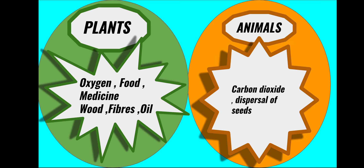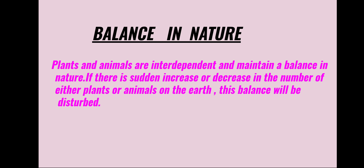Carbon dioxide gas released by animals is used by plants for photosynthesis. Animals also help plants in the dispersal of seeds and pollination. Thus we can say that plants and animals are interdependent. This interdependence of plants and animals helps to maintain a balance in nature.